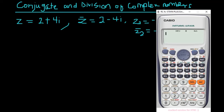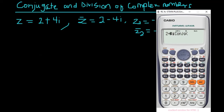Now you want to find the conjugate of z = 2 + 4i. Click Shift, then click 2 — you'll see 'Complex' written in yellow. Select that and click 2 again for the conjugate function. Insert your complex value: type 2 + 4i, then press equals and you get your conjugate answer.